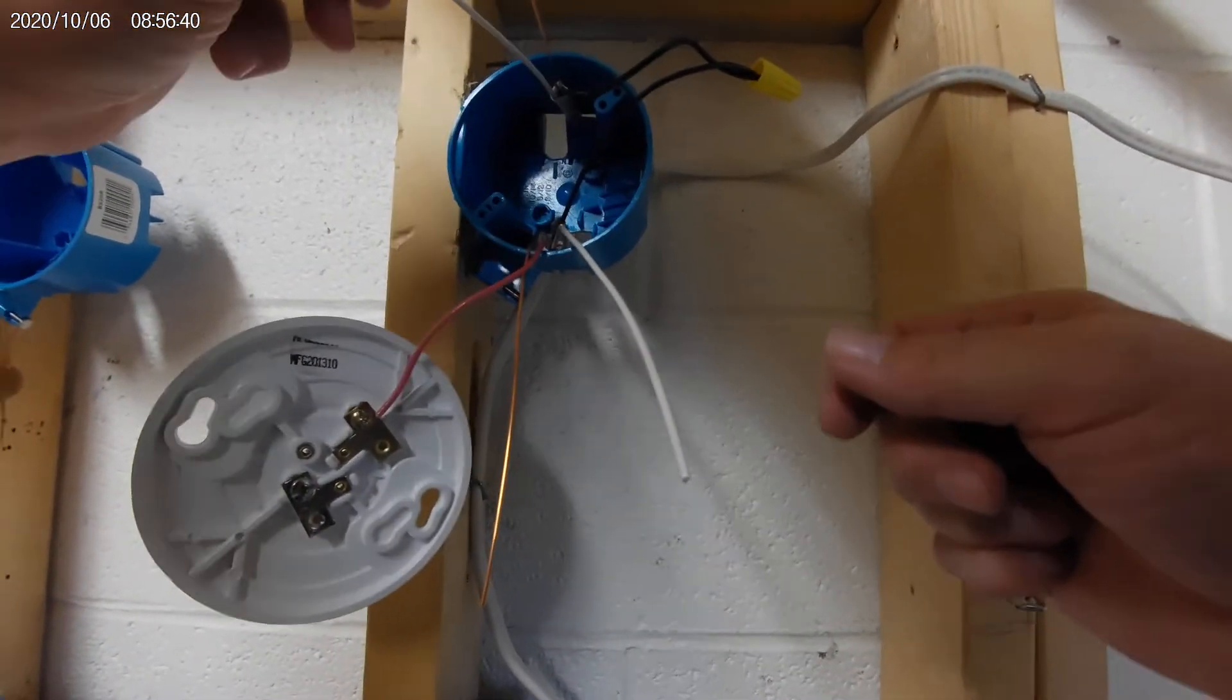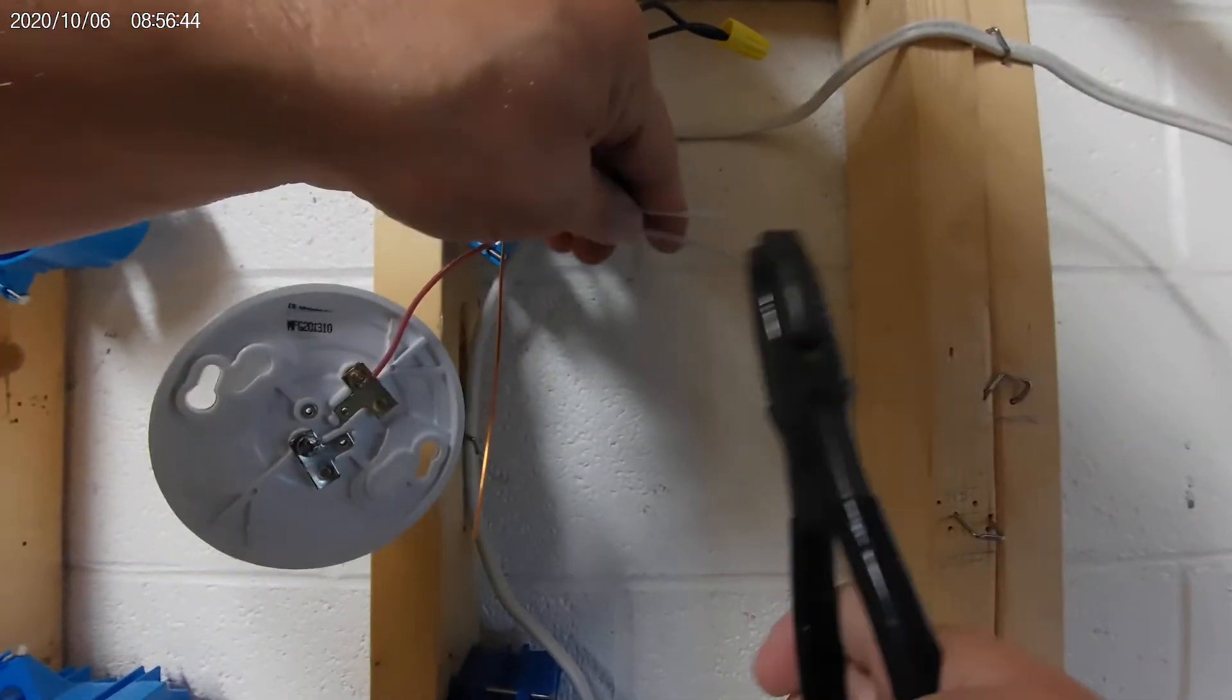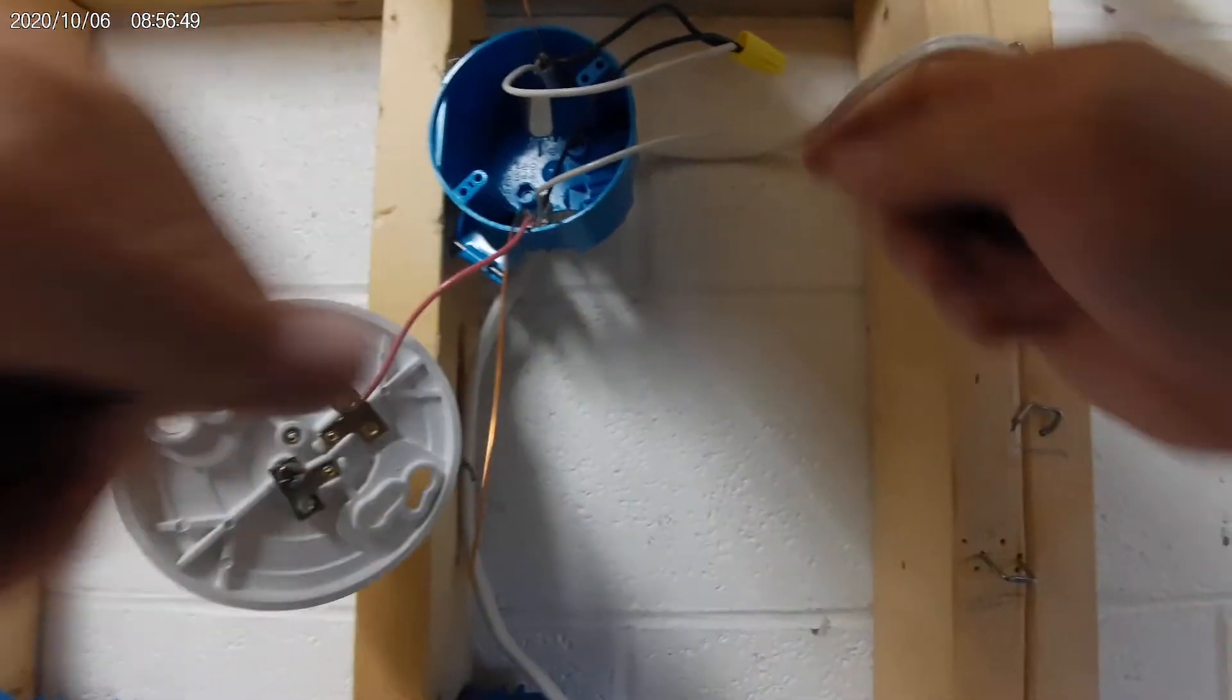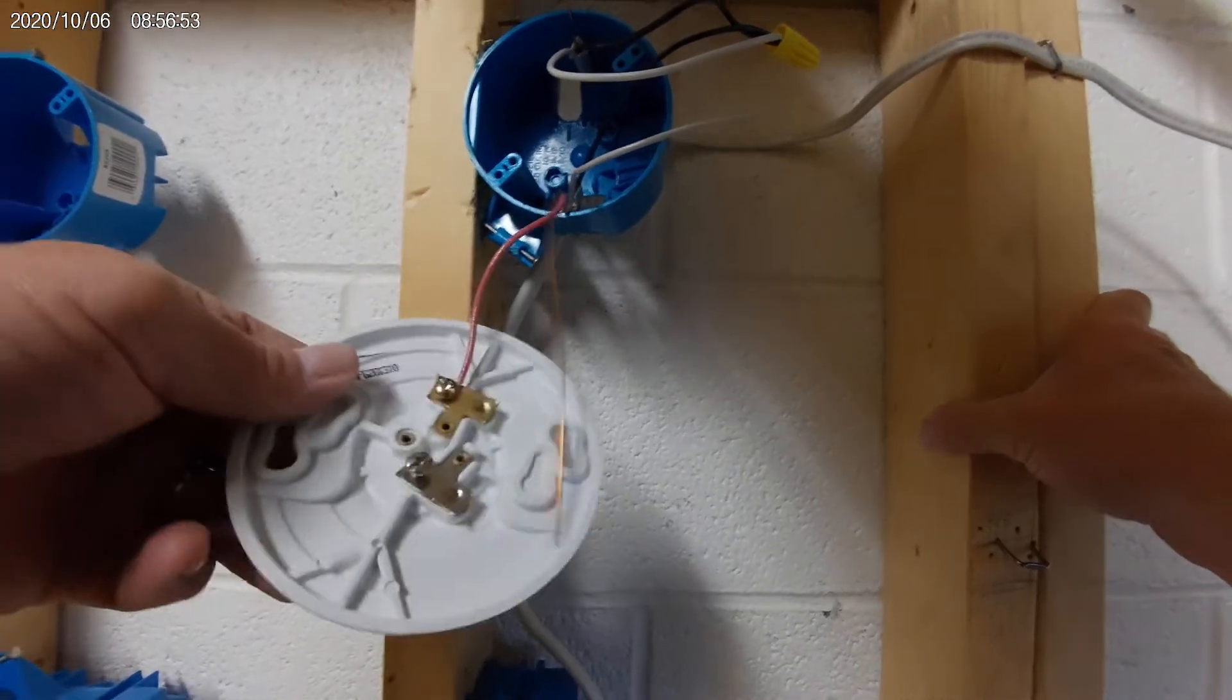Now I have the neutral for the light and a neutral going down to the box. So I would take those, put a pigtail on them, take them to the white for the neutral onto the silver screw of the light.